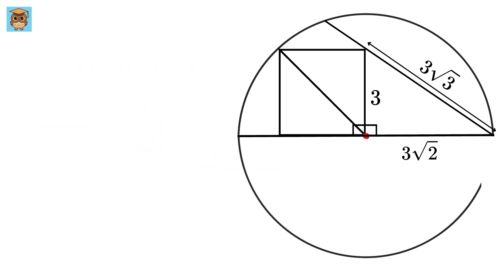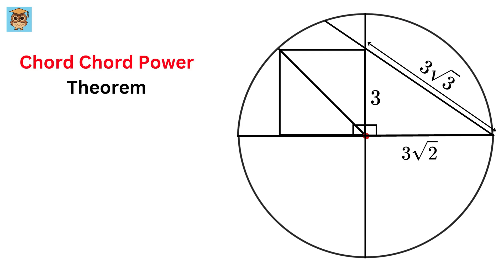Let us complete this semicircle. Then draw this radius and also complete this remaining part of the diameter. Now we can use the chord chord power theorem which states that if two chords cross each other inside a circle the product of the lengths of the two parts of one chord is equal to the product of the lengths of the two parts of the other chord.